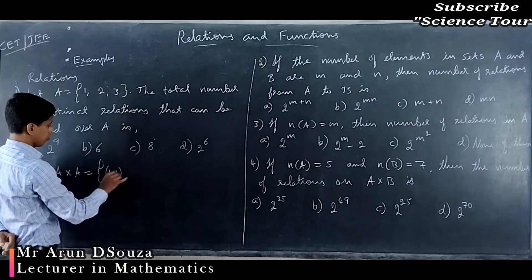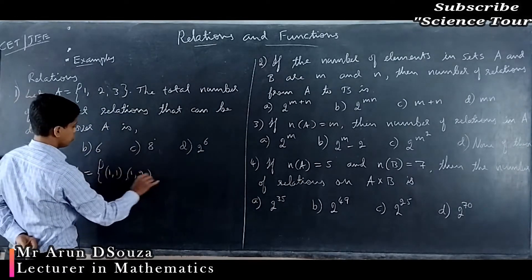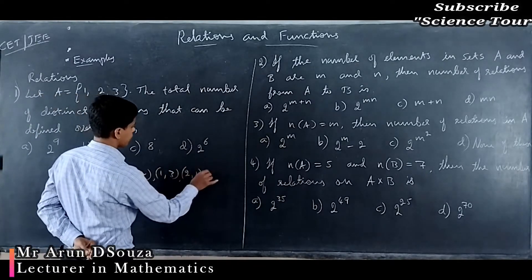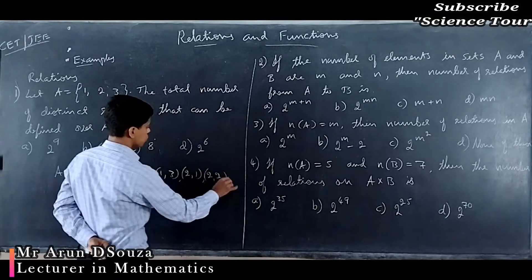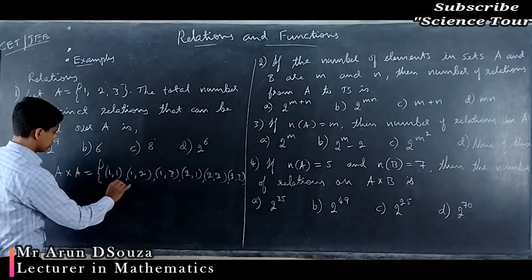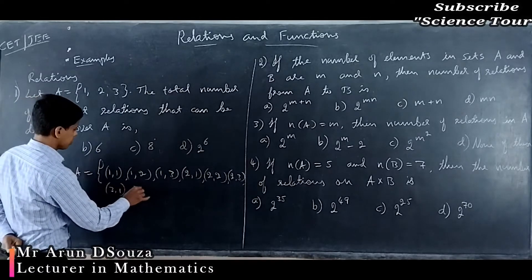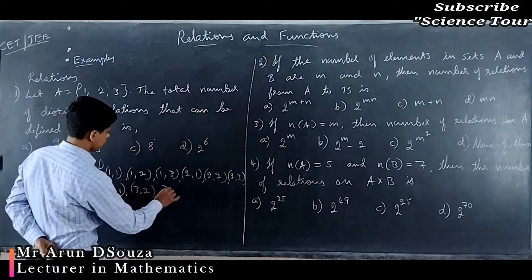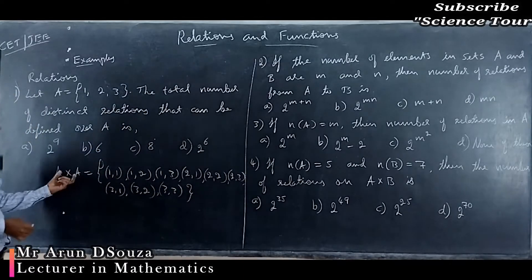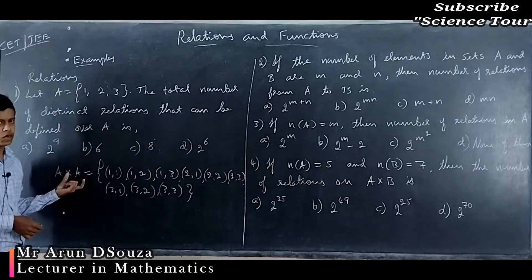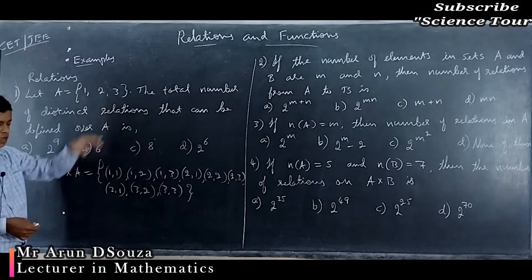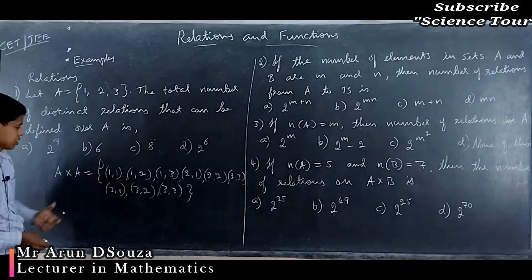The Cartesian product A×A is: (1,1), (1,2), (1,3), (2,1), (2,2), (2,3), (3,1), (3,2), and (3,3). If only one set is given, you take the set again and write all possible ordered pairs.